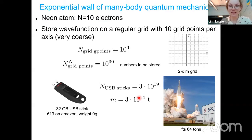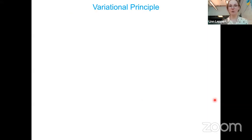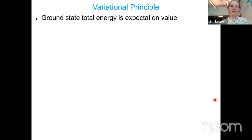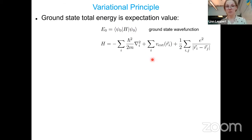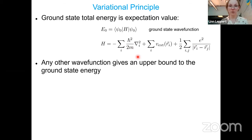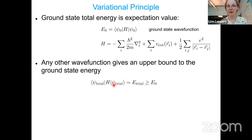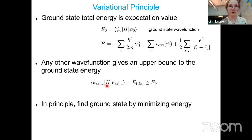We need to do smart things to actually solve the problem. At the foundation of essentially all smart ways of solving this problem is the variational principle. The variational principle says we can write the ground state total energy as an expectation value with the ground state wave function. Any other trial wave function gives an upper bound to the ground state energy — anything else I put in gives an energy that is either higher or the same as the ground state. This means that by minimizing the energy, I can find the ground state.